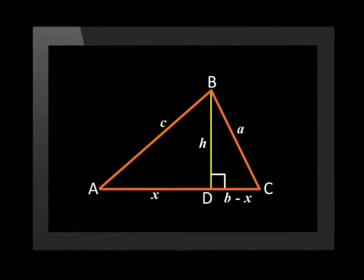In triangle ABC, perpendicular height H is dropped from B to D. Line AC is divided into two parts, AD with the dimension of X and DC with the dimension of B minus X.